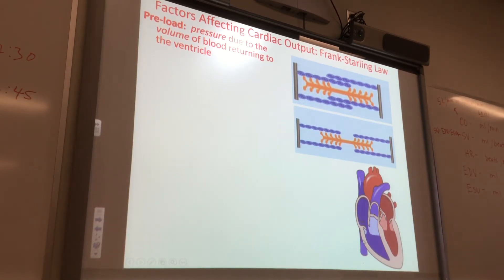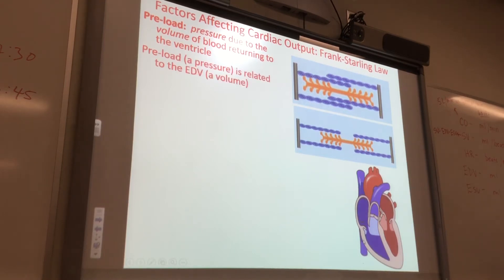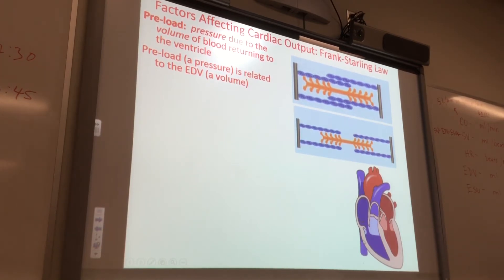What's the volume measurement called at the end of systole? End-systolic volume. At the end of diastole? End-diastolic volume. So the preload is related to the end-diastolic volume. At the end of diastole, your heart is relaxed, it's filling up, and with that volume there is an associated pressure called the preload.